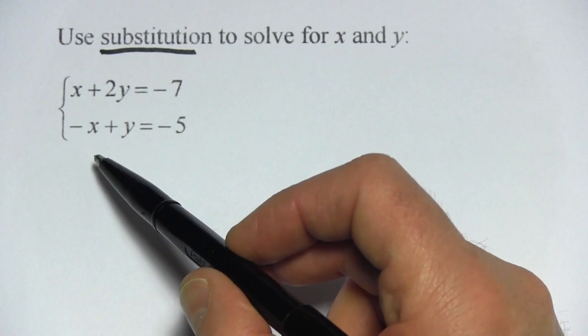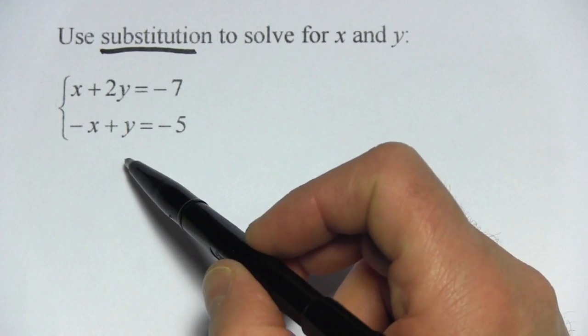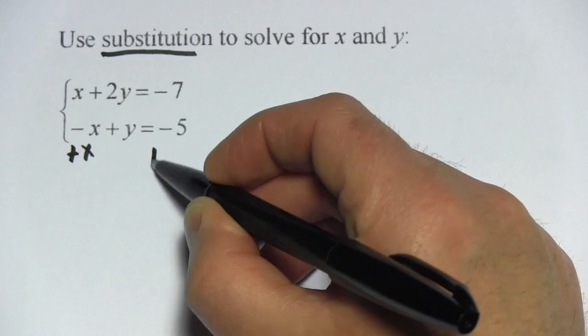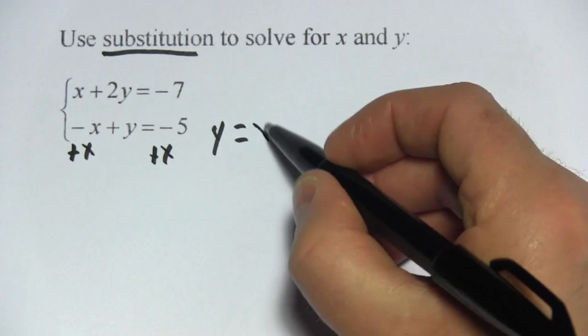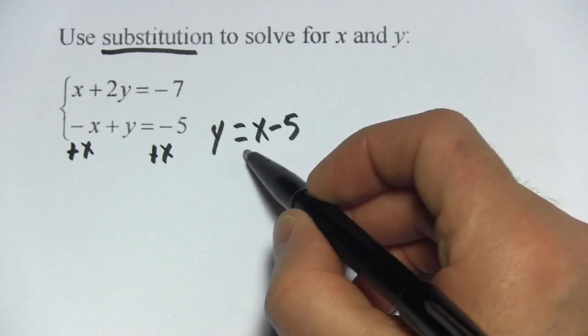The one that jumps out at me is this second equation here because I can see that just with one step I can solve for y. If I add x to both sides, I would get y equals x minus 5. Now I've got one of the equations solved for y.